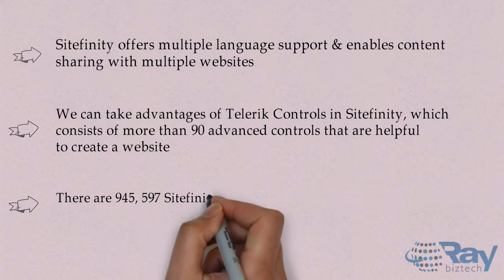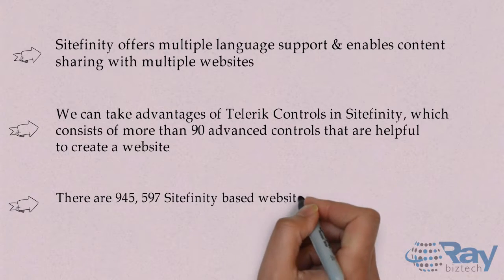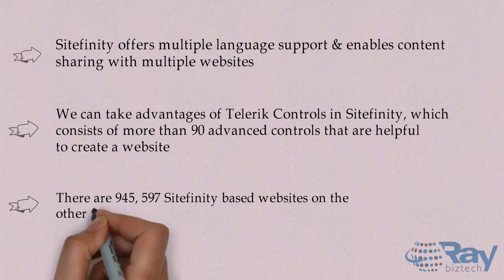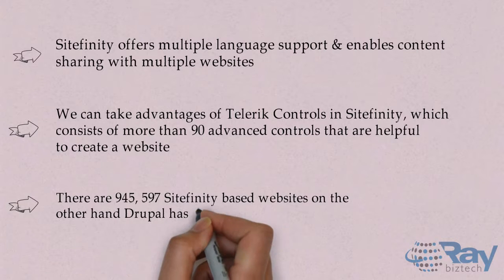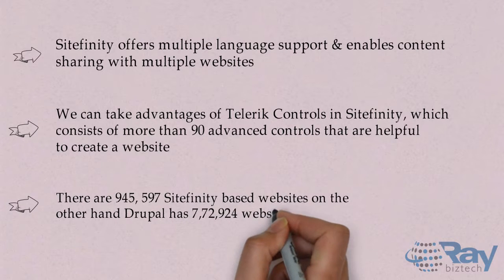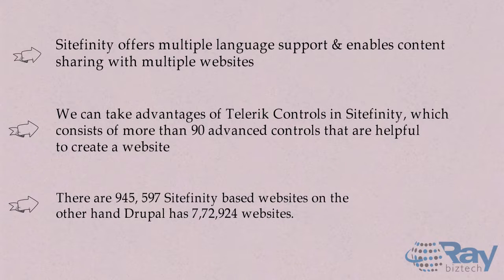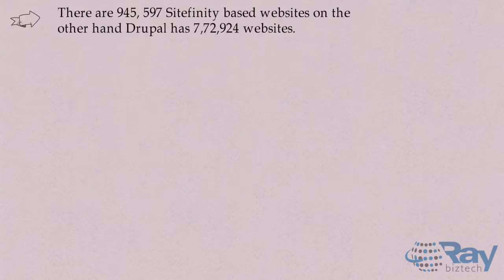There are 945,597 Sitefinity-based websites. On the other hand, Drupal has 772,924 websites.